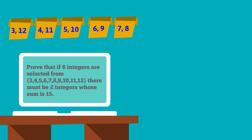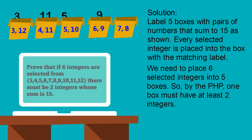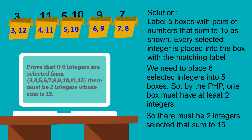Now let's look at a solution to the problem. I'm going to do this solution in the spirit of the pigeonhole principle idea of putting things into holes — or in this case, boxes. Label five boxes with pairs of numbers that sum to 15, as shown. Every selected integer is placed into the box with the matching label. We need to place six selected integers into five boxes. So by the pigeonhole principle, one box must have at least two integers, as you can see in the example here. So there must be two integers selected that sum to 15.